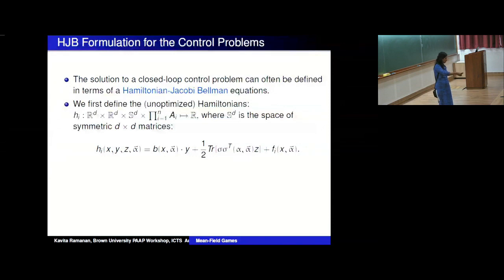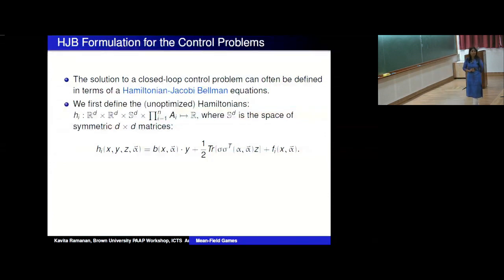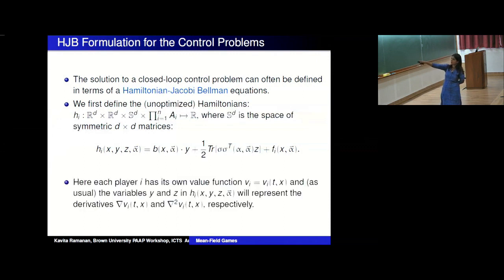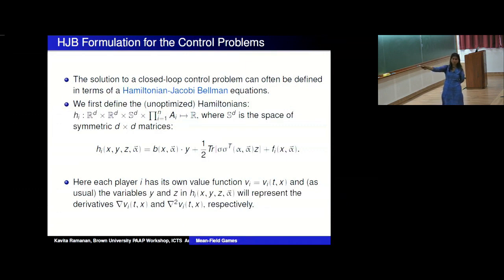Because it's a Markovian control, if the problem is stationary it won't depend on time, but otherwise you have dependence on the current position in space. This is a classical optimal control problem; I'm going to take stochastic control as given and focus on what is new in the game context. The solution to a closed-loop control problem is typically defined in terms of a Hamilton-Jacobi-Bellman equation — a dynamic programming principle — where you define Hamiltonians H_i.